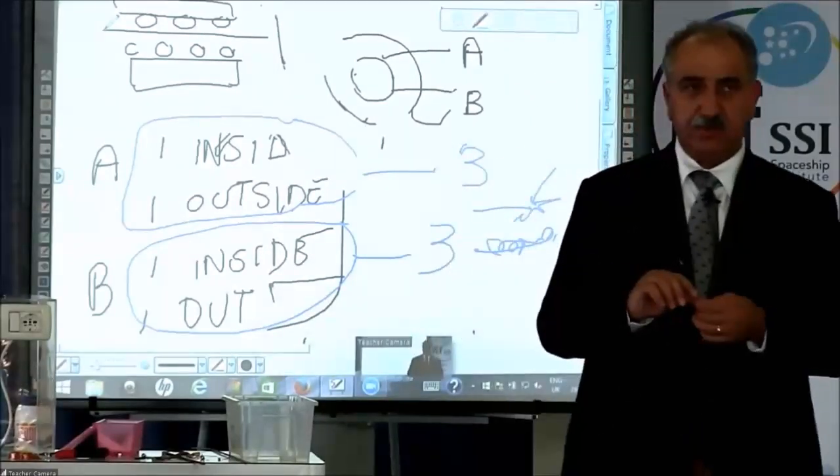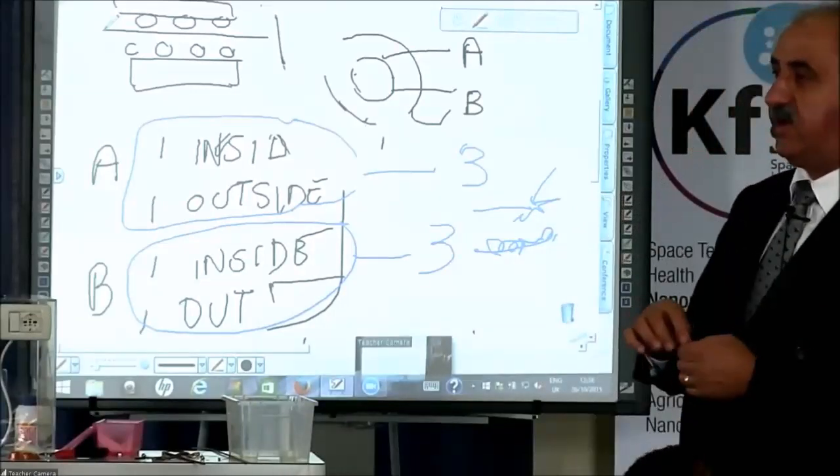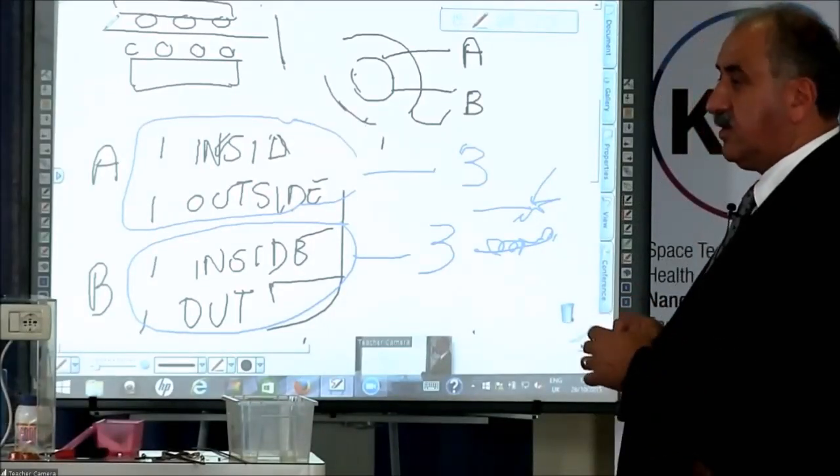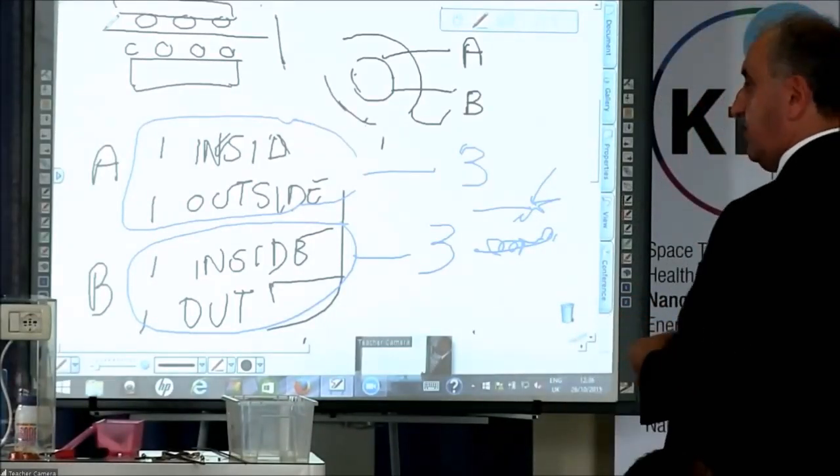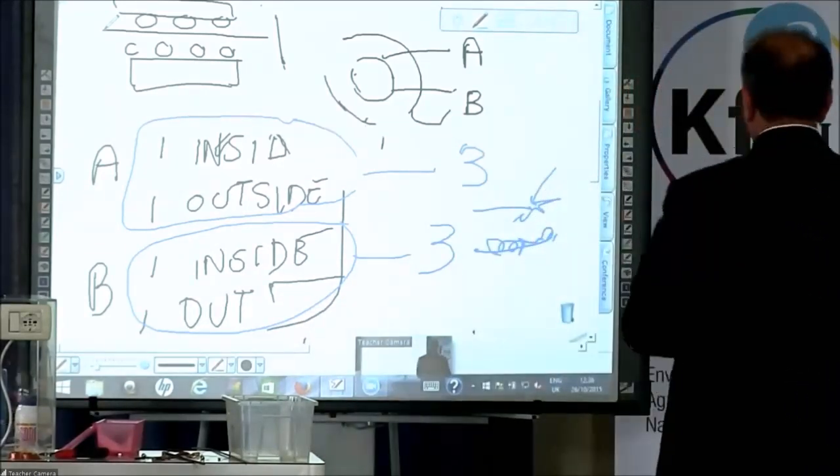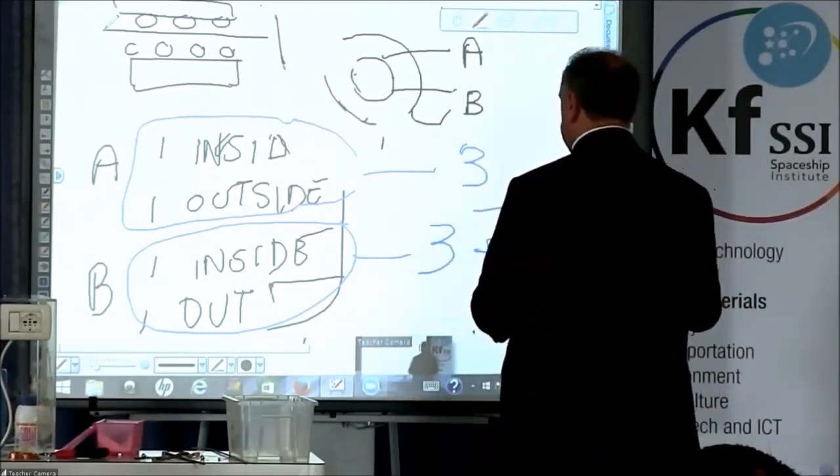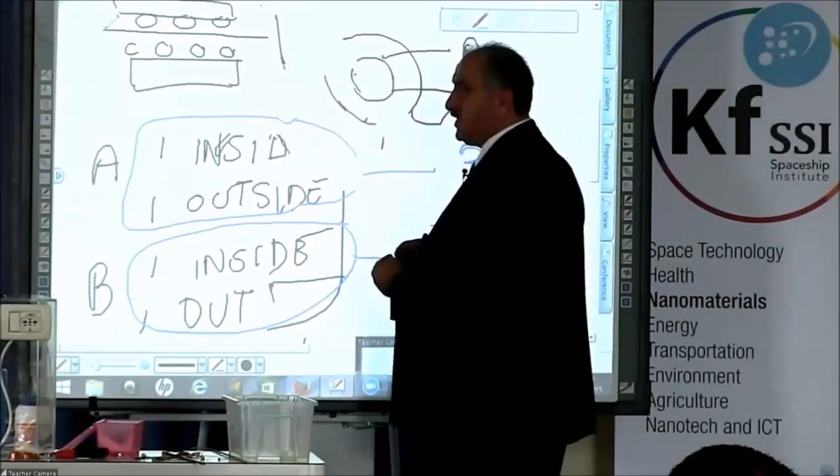If you nanocoat and still see copper on your wire, it means you need to repeat the process. Nanocoat for a second time, a third time. Don't be afraid of nanocoating—you can never damage it.